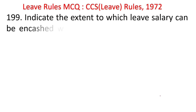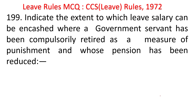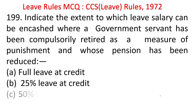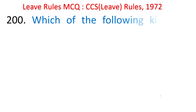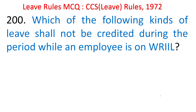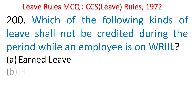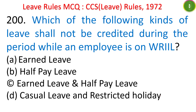Indicate the extent to which leave salary can be encashed where a government servant has been compulsorily retired as a measure of punishment and whose pension has been reduced. Options: full leave at credit, 25%, 50%, 75%. The answer is full leave at credit. Which kinds of leave shall not be credited during the period an employee is on WRIIL? The answer is earned leave (EL) and half pay leave (HPL) both — only these two shall not be credited.